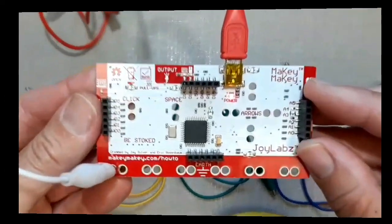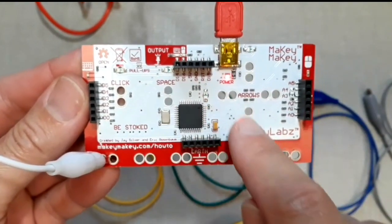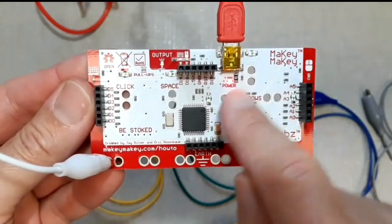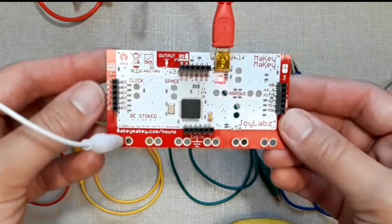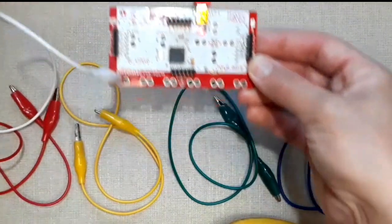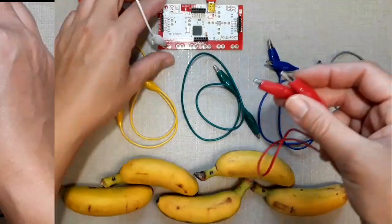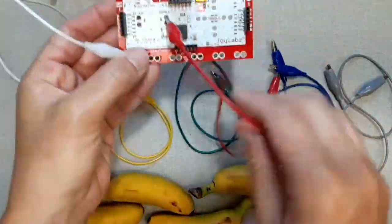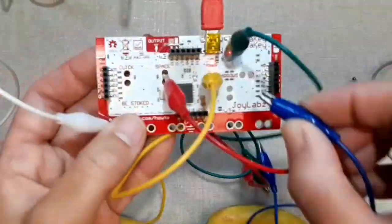You'll see on the board the space, down, up, left, and right arrows, which we will associate with the keyboard on the computer screen. Go ahead and connect the alligator clips to the holes marked space, left, up, right, and down in any order you want. Just make sure the alligator clip bites down firmly on the board.